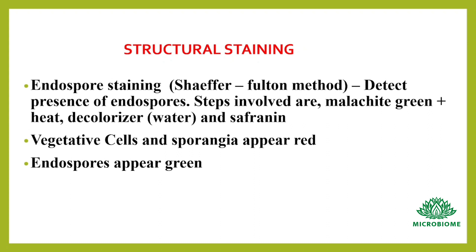Next, structural staining. First, endospore staining, which detects the presence of endospores. The steps involved are: malachite green, heat, decolorizer (water), and safranin. Vegetative cells and sporangia appear red in color, while endospores appear green.